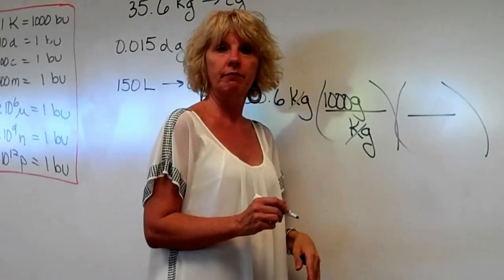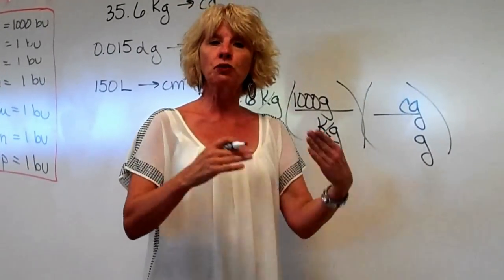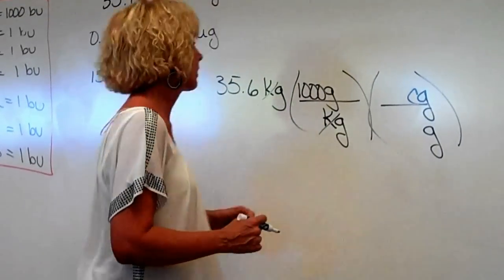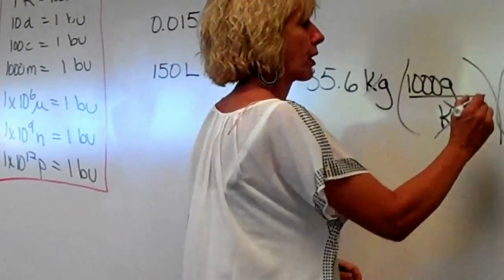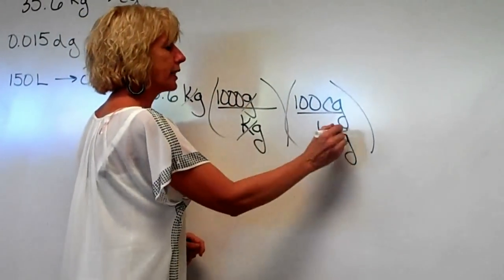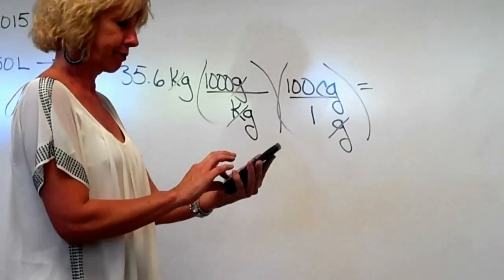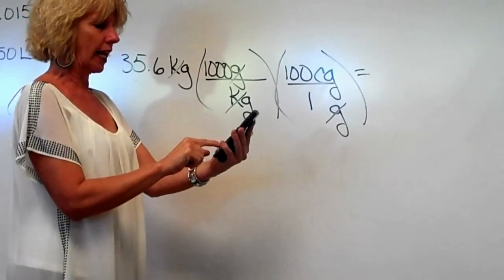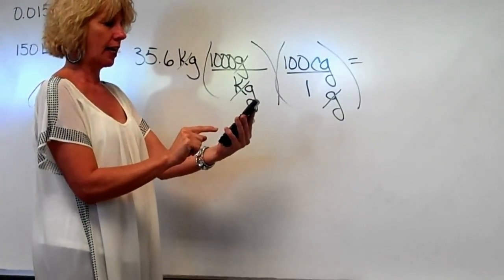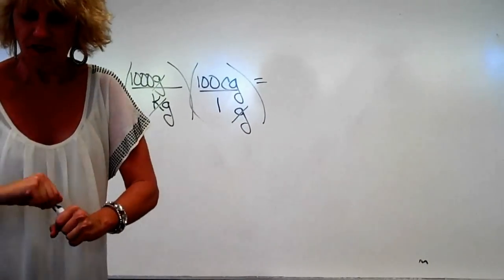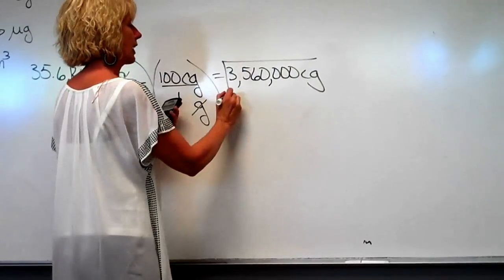Centigrams goes on top so that grams goes on the bottom and cancels out. What's the relationship between centigrams and grams? From the chart, there are 100 centis in a basic unit, so we have 100 centigrams per one gram. Gram cancels out and we're left with centigrams. Now all we have to do is multiply: 35.6 times 1,000 times 100, and we get 3,560,000 centigrams.